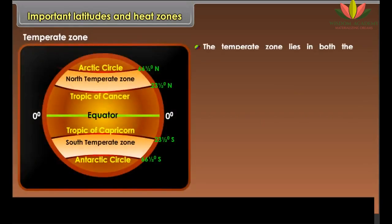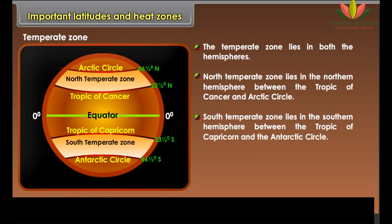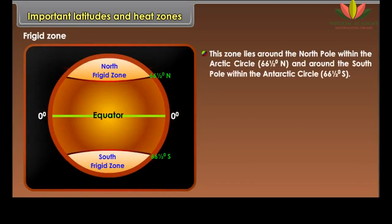Temperate Zone. The Temperate Zone lies in both the hemispheres. The North Temperate Zone lies in the Northern Hemisphere between the Tropic of Cancer and the Arctic Circle. The South Temperate Zone lies in the Southern Hemisphere between the Tropic of Capricorn and the Antarctic Circle. These zones are neither too hot nor too cold. The Frigid Zone lies around the North Pole within the Arctic Circle at 66 and a half degrees north, and around the South Pole within the Antarctic Circle at 66 and a half degrees south.